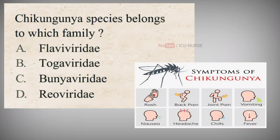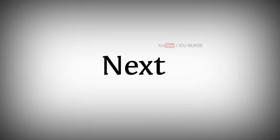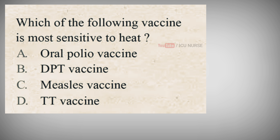Chikungunya species belongs to which family? A. Flaviviridae, B. Togaviridae, C. Bunyaviridae, D. Reoviridae. The correct answer is B. Togaviridae. Chikungunya is a mosquito-borne viral disease first described during an outbreak in southern Tanzania in 1952. It is an RNA virus that belongs to the alpha virus genus of the family Togaviridae.